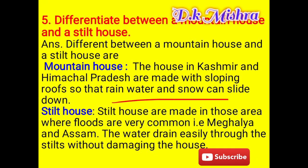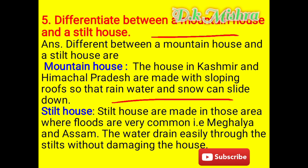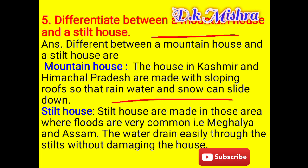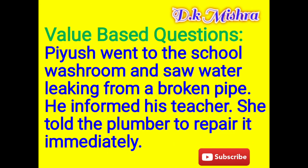Question five: Difference between a mountain house and a stilt house. Mountain houses — in Kashmir and Himachal Pradesh, houses are made with sloping roofs so that rainwater and snow can slide down easily. Stilt houses — made in areas where floods are very common, such as Meghalaya and Assam, so water can drain easily through the stilts without damaging the house.